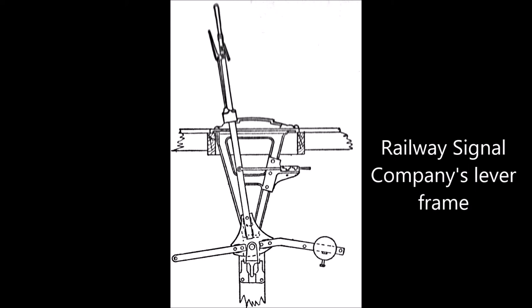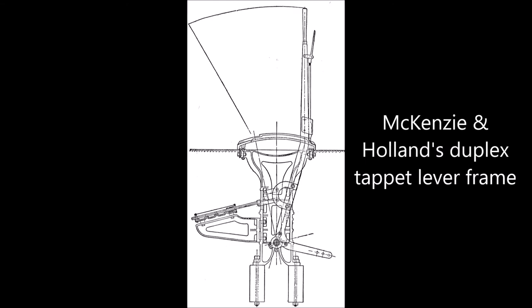The London Brighton and South Coast Railways standard frame is adapted from the Stevens pattern. Drop boxes which slide on the lever take the place of the usual spring catch rods. The levers are all centred on separate pins which makes it an easy matter to renew any which are worn.